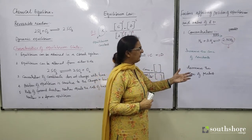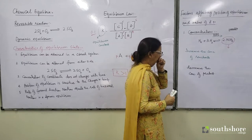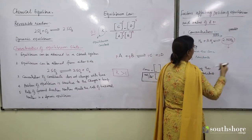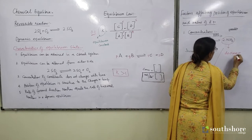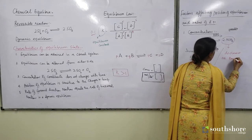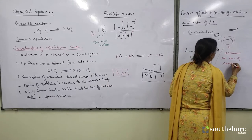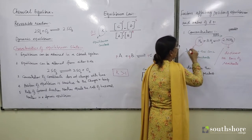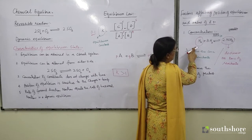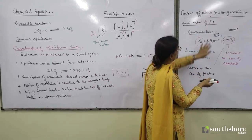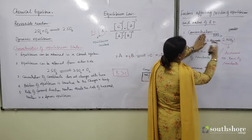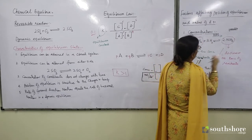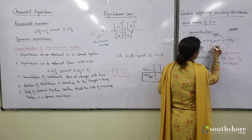Now if I do the opposite — I decrease the concentration of reactants, say for example nitrogen. When we decrease this concentration, what happens? Ammonia will decompose and it will produce nitrogen and hydrogen. So position of equilibrium would be shifted towards the backward side — it is going to shift position of equilibrium towards the left-hand side.